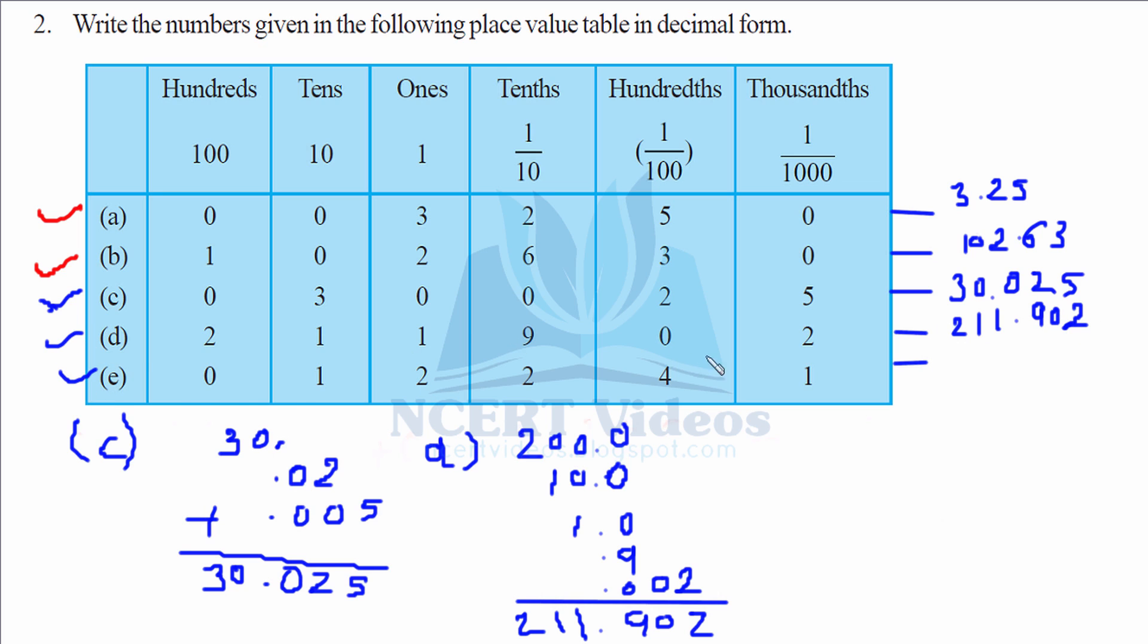Then the E part, the final part. 10 for tens, 4 for ones. Tenths is 0.2, hundredths would be 0.04, and thousandths would be 0.001. Adding them up, adding is the easiest part. It gives you 12.241.